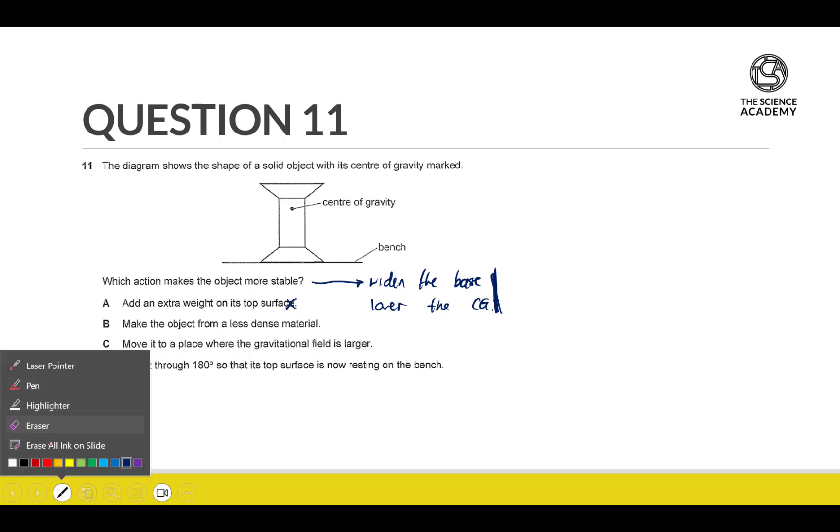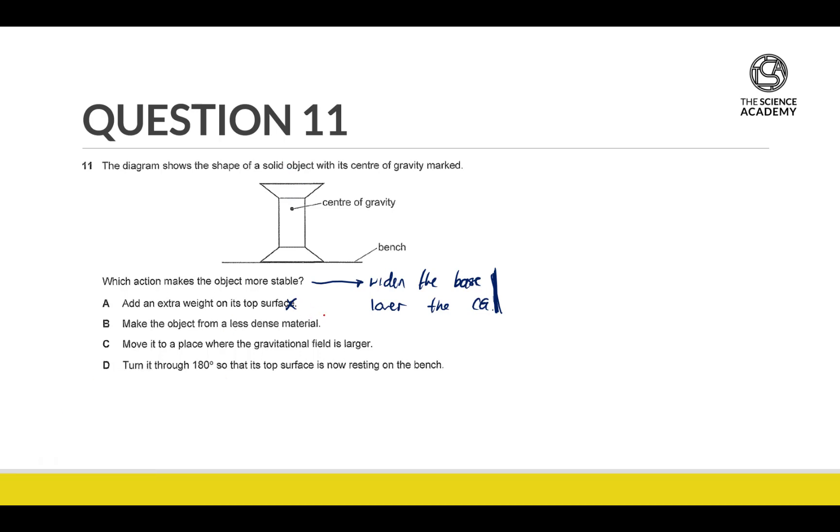Now, the next thing is make the object from a less dense material. This is not going to change anything with respect to the center of gravity. The CG will still be here, it's just that the weight is going to be lower. So this is not going to change anything at all.